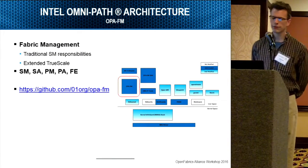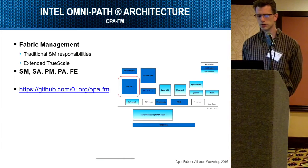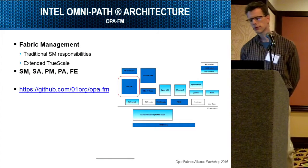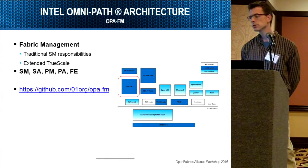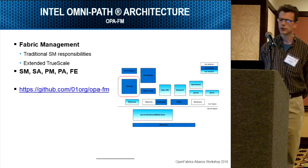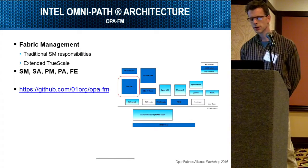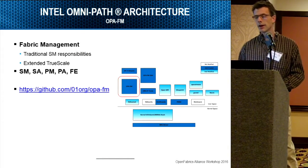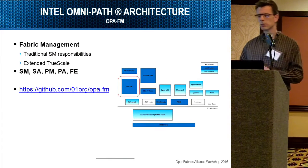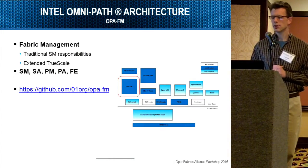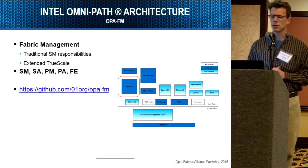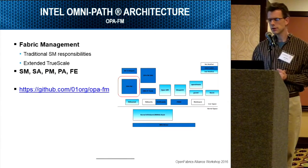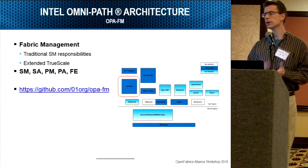We do have a new fabric manager, which is similar to OpenSM but we've extended it with enhancements for OmniPath. It has five pieces: an SM, an SA, a PM, a PA, and an FE. The FE is what we call a fabric executive, and that allows secure SSH to get into the manager to retrieve statistics and similar data. This is the repo where we're hosting that code.